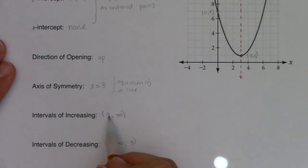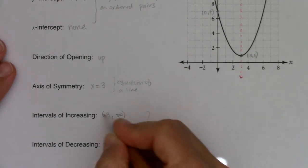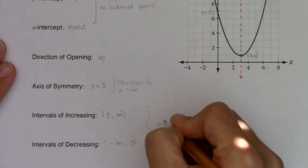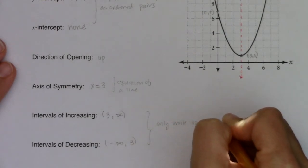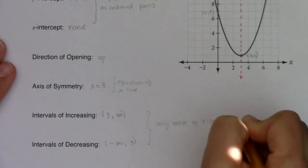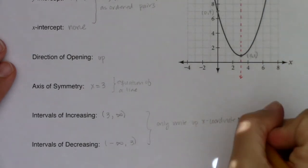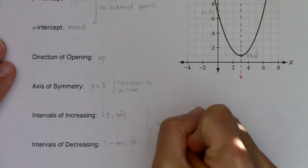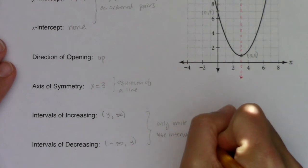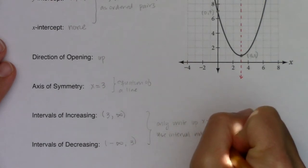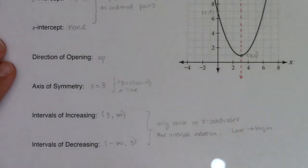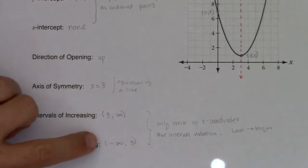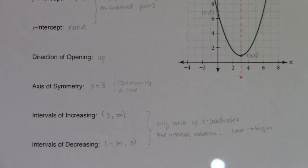And when you do intervals of increasing and decreasing, only write up the x-coordinates and use interval notation. We're always going low to high. So this number is lower than this number. This number is lower than this number.